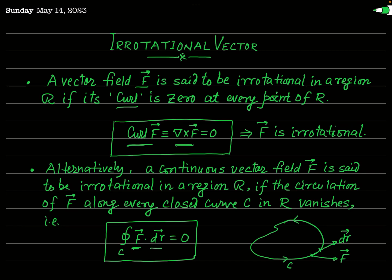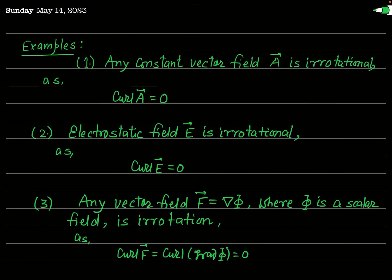Now we will see some important examples of irrotational vectors. In the first example, if A is any constant vector field — say A equals A1·i plus A2·j plus A3·k in 3D space, where A1, A2, and A3 are constants and not functions of x, y, and z — then the curl of any constant vector is equal to 0. So the condition curl of A equals 0 is satisfied, and vector A is called an irrotational vector. Any constant vector field is an example of an irrotational vector.